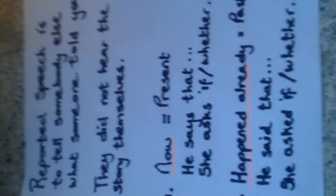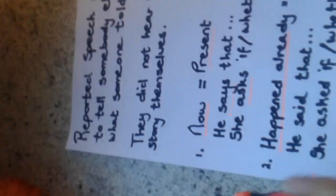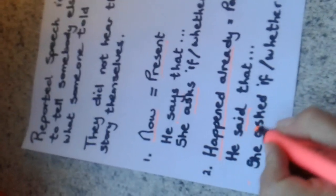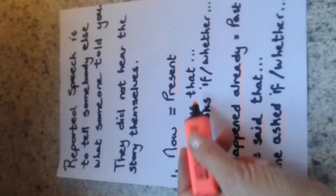Now let's have a look at the first page. Reported speech is to tell someone else what someone told you — they did not hear the story themselves. So if they start reporting in the present — he says that, or she asks if — then we can consider it to be present because the introductory verb is in the present. If it already happened and you have to start with 'he said' or 'he asked' or 'he wanted to know,' these are called your introductory verbs and they tell you whether it is going to be in the present or in the past.